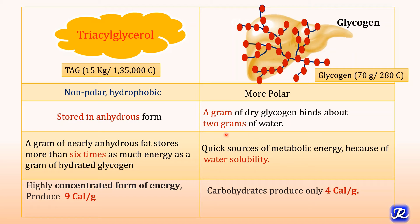One gram of glycogen requires two grams of water. In a healthy individual of 70 kg, about 15 kg of triacylglycerol is stored in the adipose tissue, which is equivalent to 135,000 kilocalories, while glycogen storage is just 70 to 80 grams, equivalent to only 280 kilocalories. If this much energy — 15 kg — were to be stored as glycogen instead of fat, it would require so much water that the person's weight would increase by at least 55 kg. This explains why fat has been chosen as a fuel reserve during evolution.